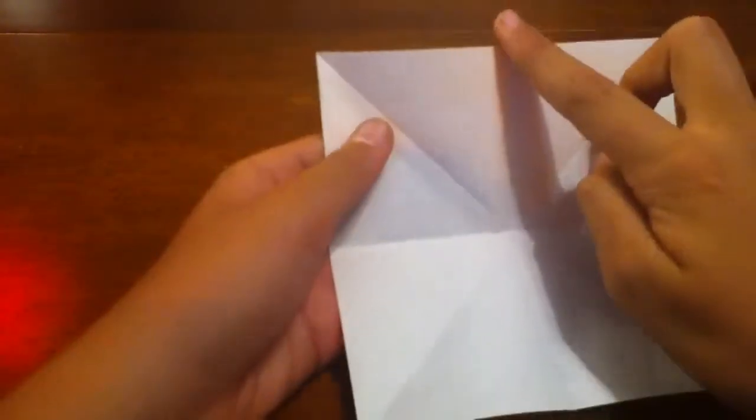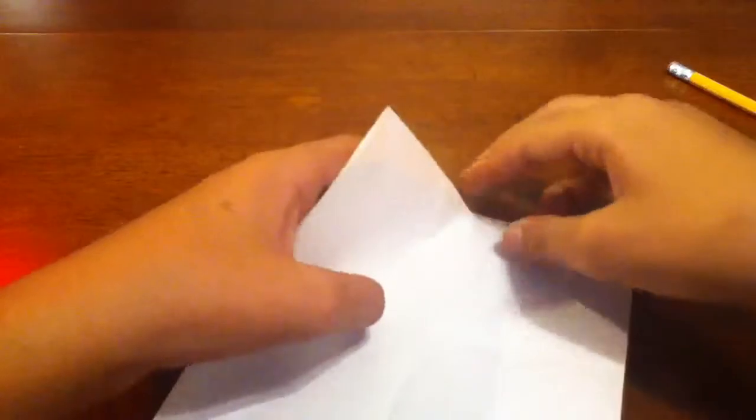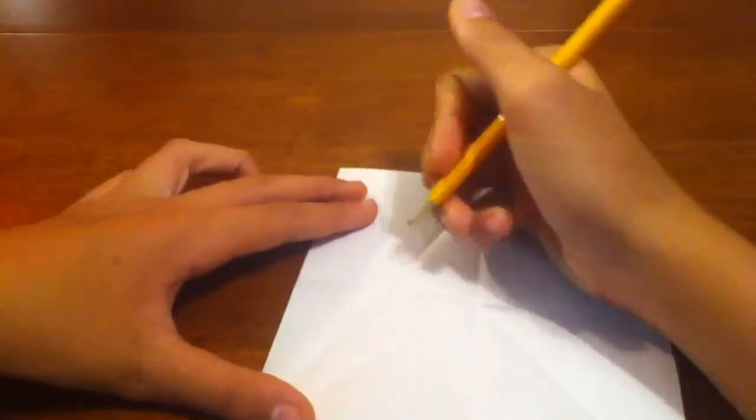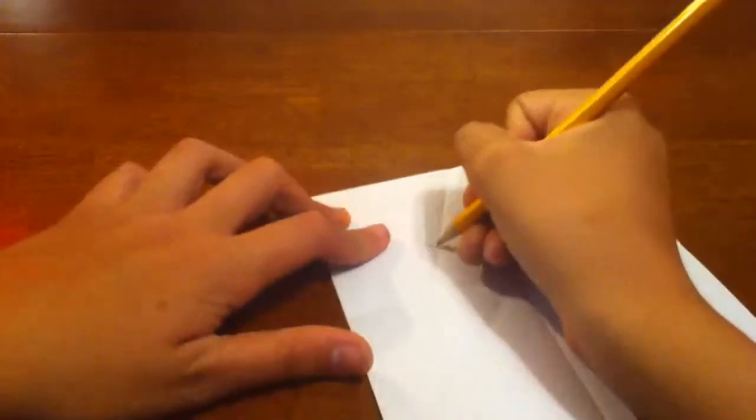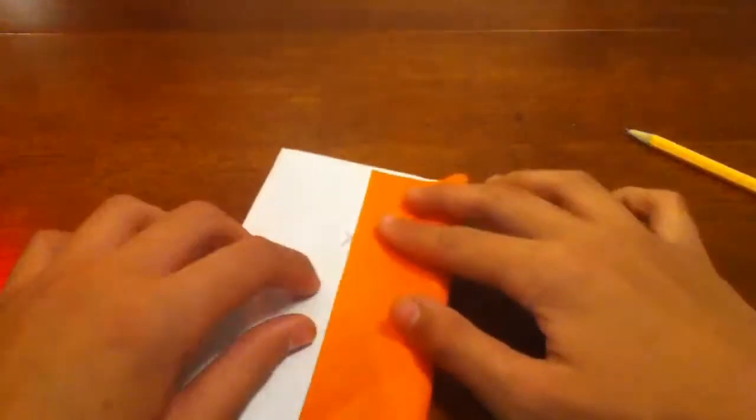To divide it into thirds you're going to make a crease from the top of the center crease right here all the way to the bottom edge like this. Now at this intersection where the diagonal crease and this crease intersect, fold this edge to the center of that.